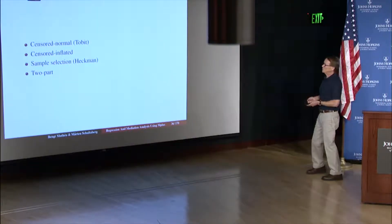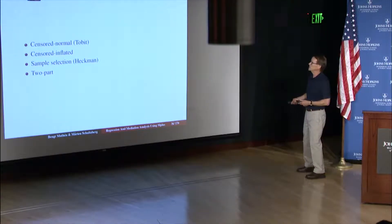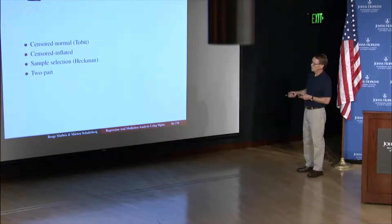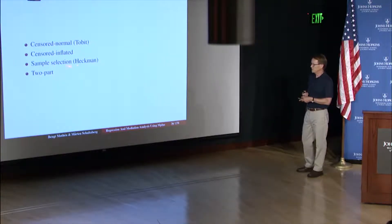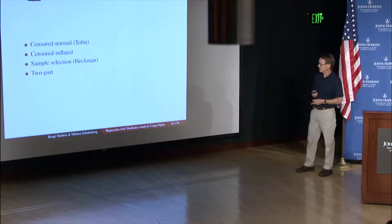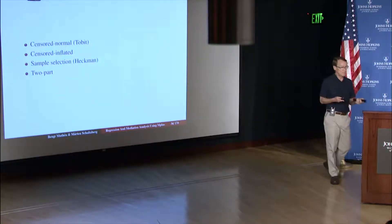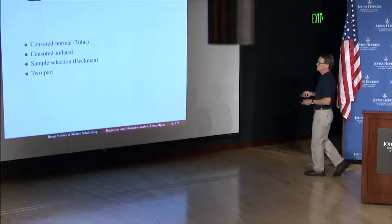We have a lot of choices there, just like within counts. Now we're in the area of censored modeling, and we can have censored normal modeling, also called Tobit, after Tobin, and censored inflated — so the inflation comes in here with a zero class — or sample selection modeling, also called Heckman modeling, after Jim Heckman in Chicago, or two-part modeling, which exists for count outcomes but now we're going to talk about it for continuous outcomes.